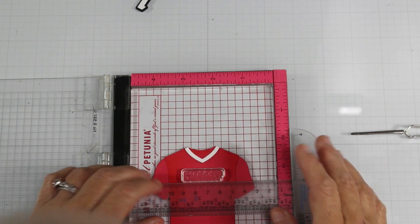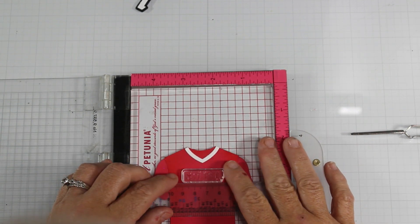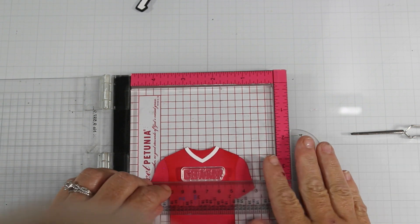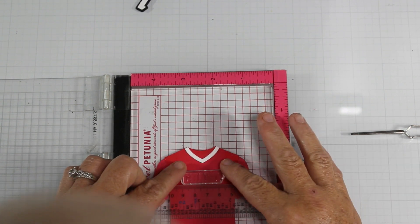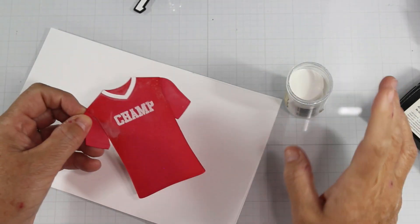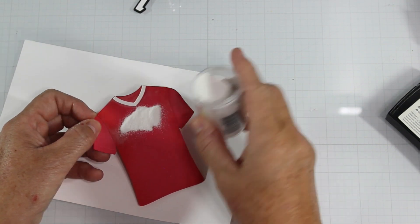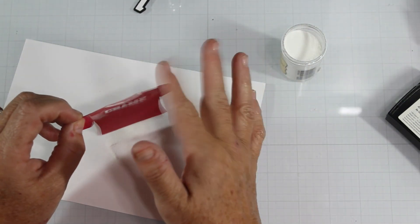Here I am using a T-Ruler to add the word champ to the jersey, and that's because I like my sentiments to be absolutely straight. You could omit this if you wanted. I then embossed that in white with fine detail powder and then used my wow embossing gun to melt that.